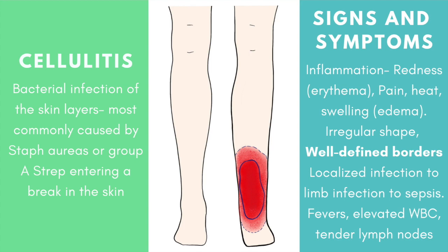Cellulitis is a bacterial infection of the skin layers. When you send samples of the blood or pus — if there's an abscess — to the lab, it usually grows Staphylococcus aureus or Group A Streptococcus. The organism enters the dermis through a break in the skin. In the hospital, I've seen IV drug users come in with cellulitis in one arm from dirty needles, diabetics with neuropathy who stepped on glass without feeling it, and ulcers that became infected. Elderly people with thin, inelastic skin and immunocompromised people are at higher risk.